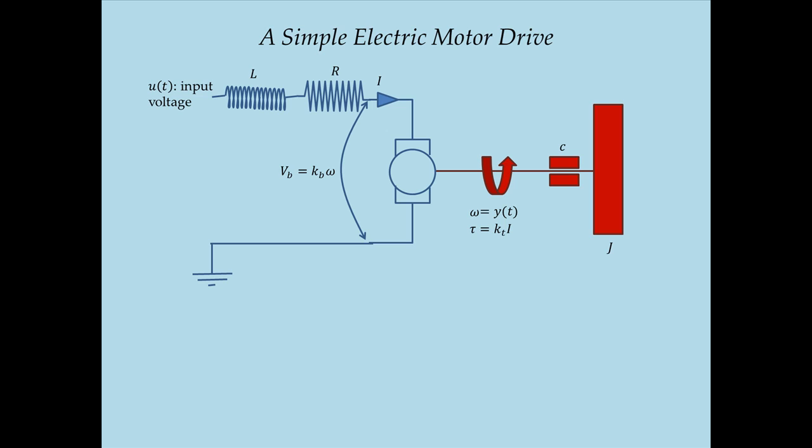We've already identified the input — it's the input voltage to the motor circuit — and the output, which is the angular velocity of the motor shaft. The next step in the state-space modeling process is to identify the state variables, i.e., what elements are able to store energy in this system. The resistor and the damper in the bearing do not store energy — they dissipate it. The ideal electric motor does not store energy; it just converts electrical to mechanical. The only energy storage devices are the inductor and the inertia.